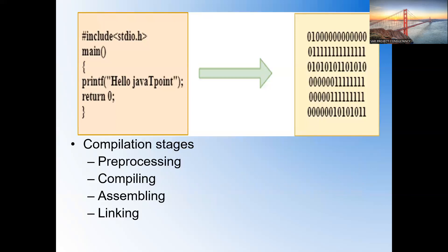Let's start. This is the overview of what is the high-level language and what is the executable file — either zeros or ones. These are the machine-understandable code. This is the high-level programming language, understood by the user and the programmer. For converting from high-level to low-level, we have four compilation stages: pre-processing, compiling, assembling, and linking.